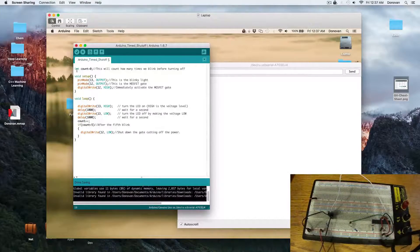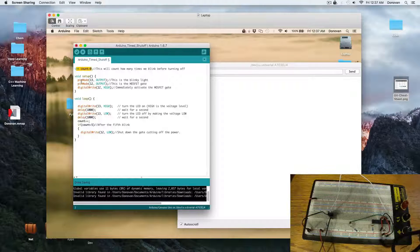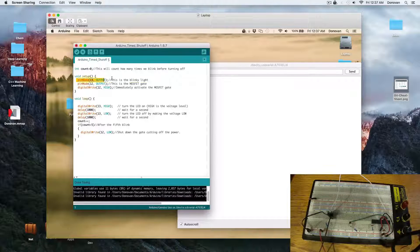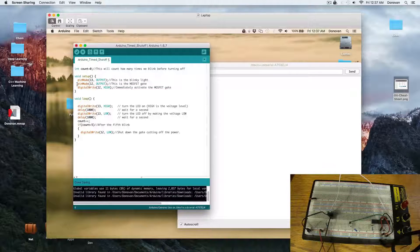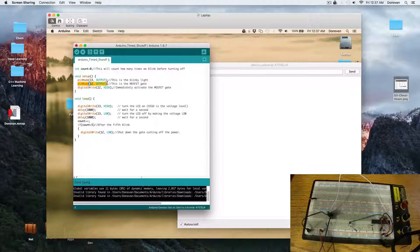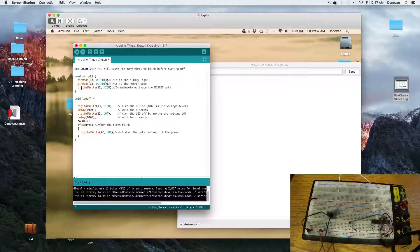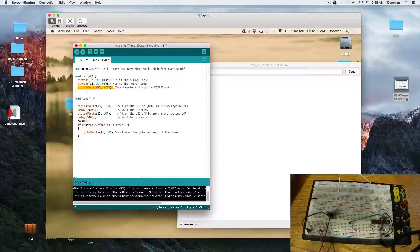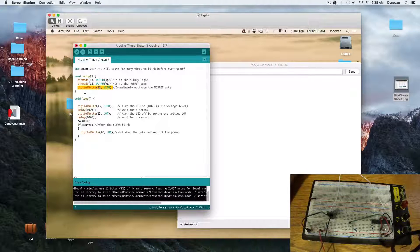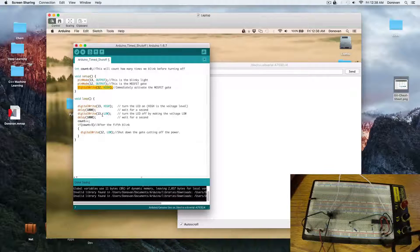And as I say, we've got a counter. This is going to count the five blinks. We go here. So this is just standard pin 13, blinky light. Then pin 12, this is what holds the gate open. Then we immediately write a high. We do that right here in the setup. And we say just go to high. That holds the gate open, which now means the Arduino will continue to get power.